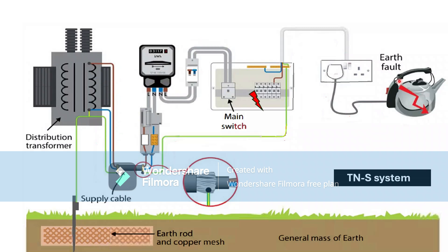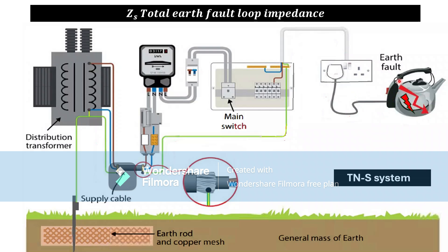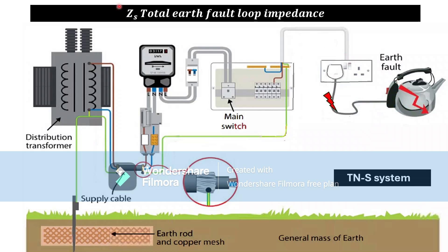This fault path resistance needs to be as low as possible so that the breaker can trip on time. This whole path is known as Zs — the total earth fault loop impedance. That means the resistance of the line and CPC from the supply transformer to the final point of the sockets or lights. The furthest point gives the highest resistance, and that's where you measure Zs.